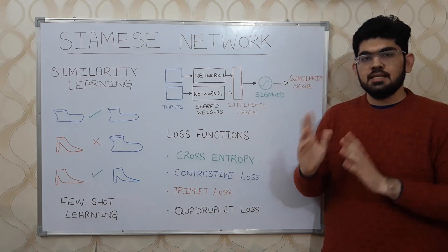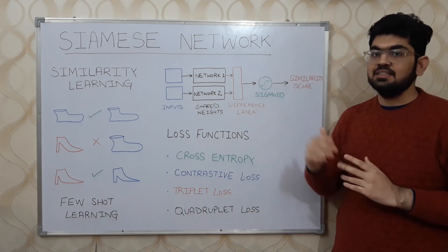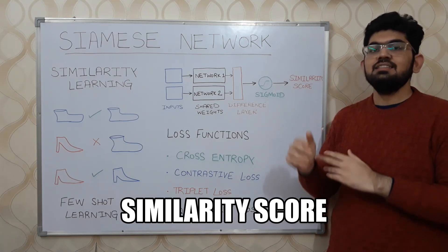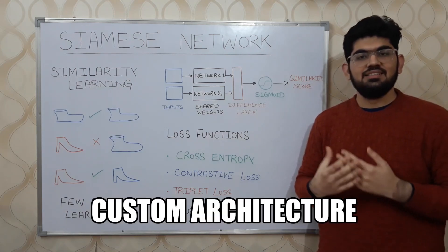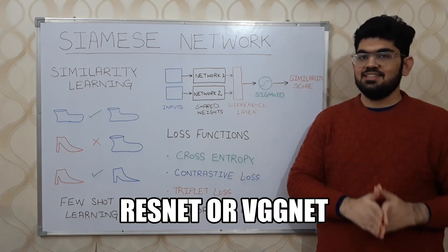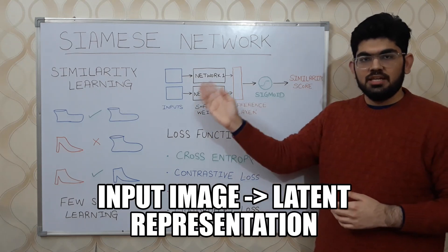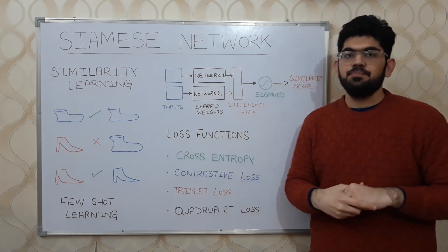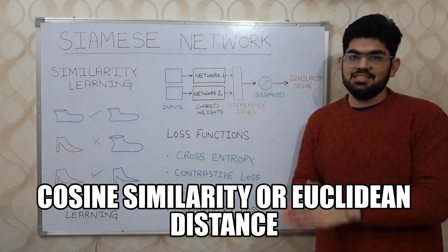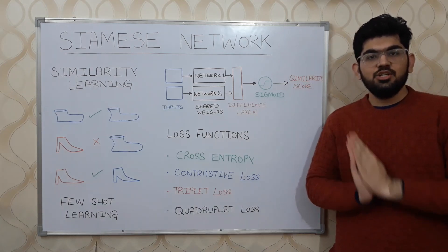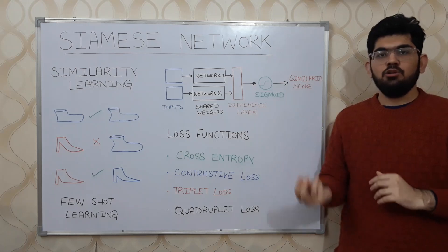The difference layer calculates some form of distance metric between those two output representations. This difference can then be passed to an activation function like sigmoid, which outputs the final similarity score. The two convolutional neural networks can be any arbitrary CNNs — custom CNNs or popular image classification networks like ResNet or VGGNet. Intuitively, the networks try to learn an embedding that maps from the input image dataset to some latent representation — a vector that can be compared using any distance metric like cosine similarity or Euclidean distance. Given two embedding vectors, their similarity is output from that distance metric.